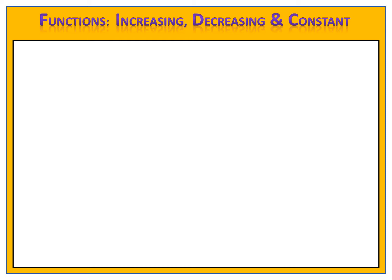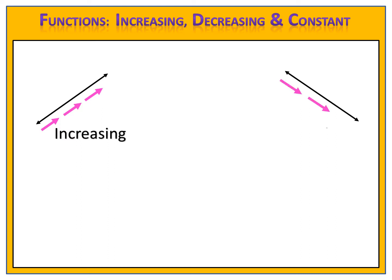Let's take a look at three graphs. Here's the first graph. Notice if I look at that graph from left to right, the graph is moving upward. When the graph is moving upward as we go across from left to right, we say that the function is increasing. Consider the second graph. Notice if I follow that graph from left to right, the graph is going downward. When the function is moving downward, we say that it is decreasing.